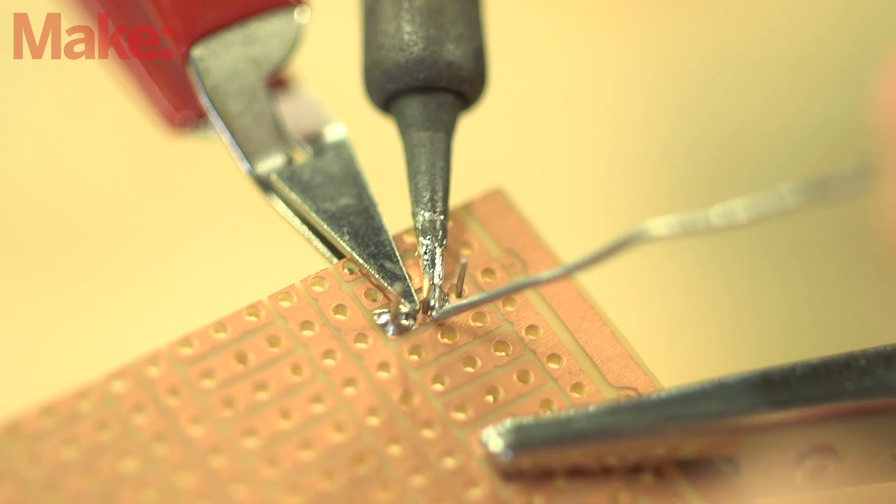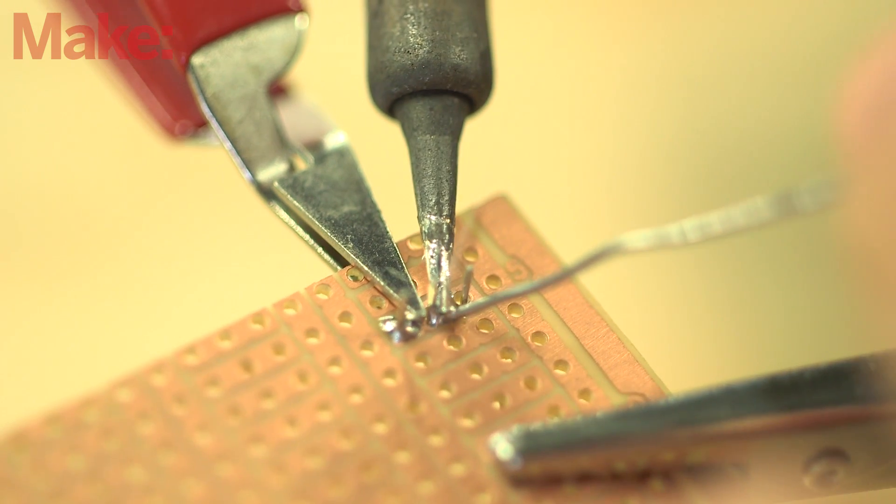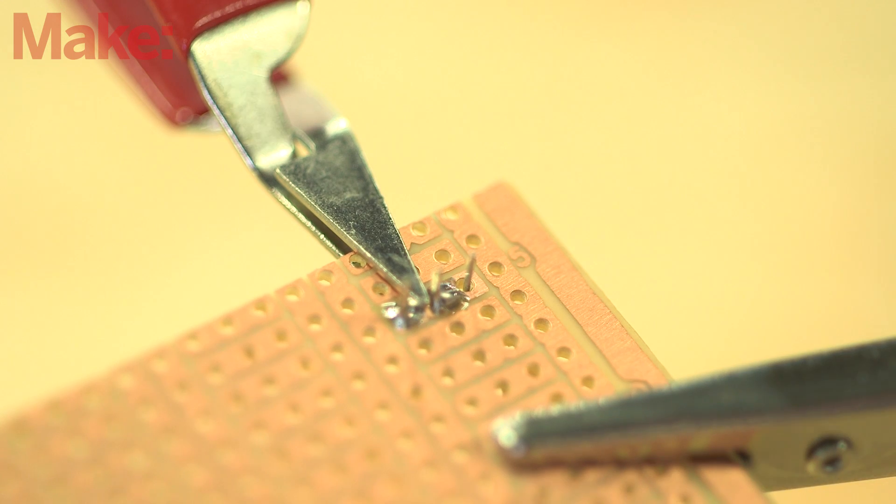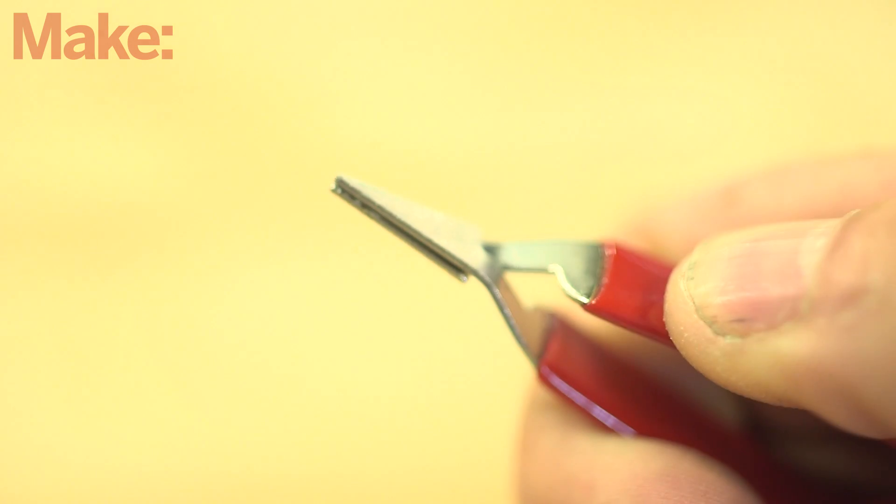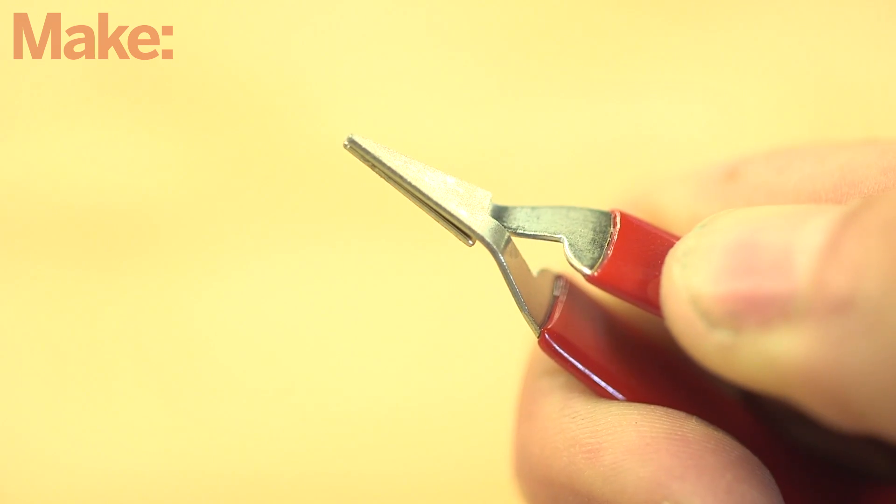These heat sink clips are intended for close soldering work. By clipping it near the iron, excess heat will be drawn off into the large metal body of the clip instead of re-melting the previous joint. They're made of thin plated spring steel that has just the right flex for tweezers.